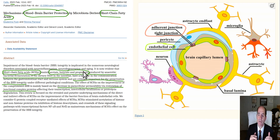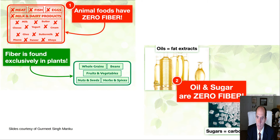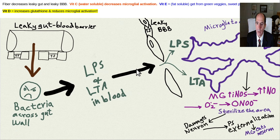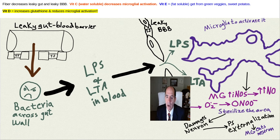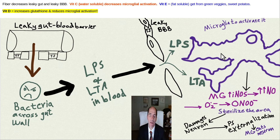The same thing that protects the gut from leaky gut also protects the blood-brain barrier — that's an important point. There is no fiber in animal foods and no fiber in oils. You can get activation of your microglia — these are the macrophage immune defense cells in the brain.